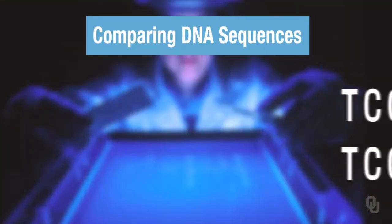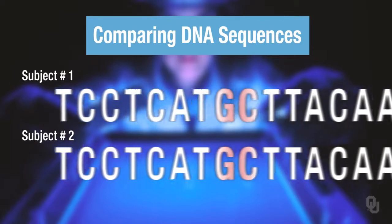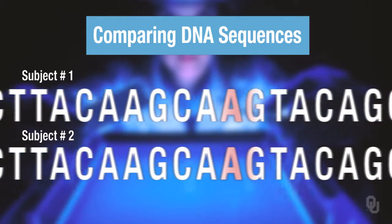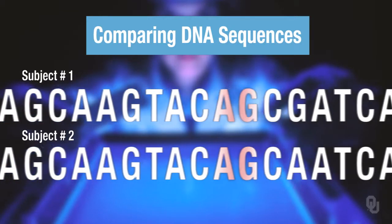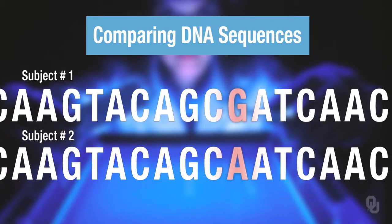Now this definition might take some time to get your head around, but it actually means something very simple. Imagine you're looking at 100 base pairs of DNA from the same gene, but drawn from two different people. You compare these two DNA fragments to each other, and you see that there is one base that is different. The remaining 99 bases are the same. So we have 100 bases, but only one difference.